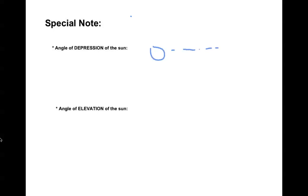Some special notes. You will see in some examples the angle of depression of the sun. What that means is if you start at the sun, you're going to look down at the ground. So here's your sun — this would be the line of sight. The angle of depression of the sun is going to look down.